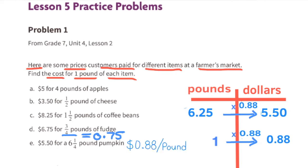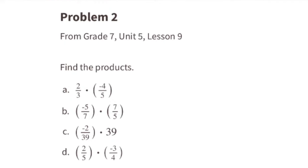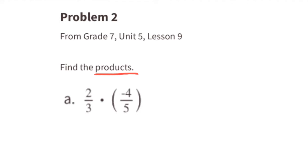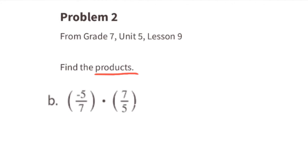Problem number two from seventh grade unit five lesson nine: find the products. Part a: we have a positive times a negative, which equals a negative. Two times four is eight and three times five is fifteen. Part b: we have a negative times a positive, which equals a negative.